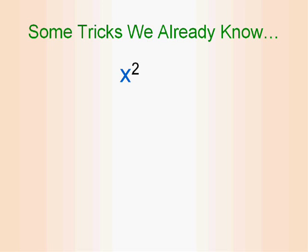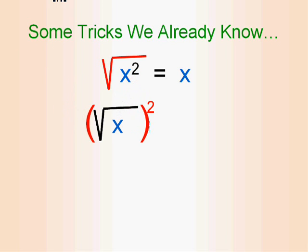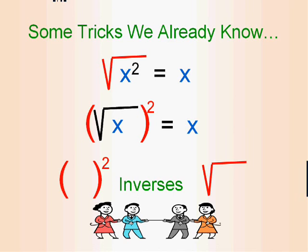Some tricks we already know about radicals. A radical or a square root undoes a square — it gets rid of the square. In the same way, we can get rid of a square root by squaring the expression. Both of these actions — squaring and square roots — we can call inverses of each other because they undo each other.